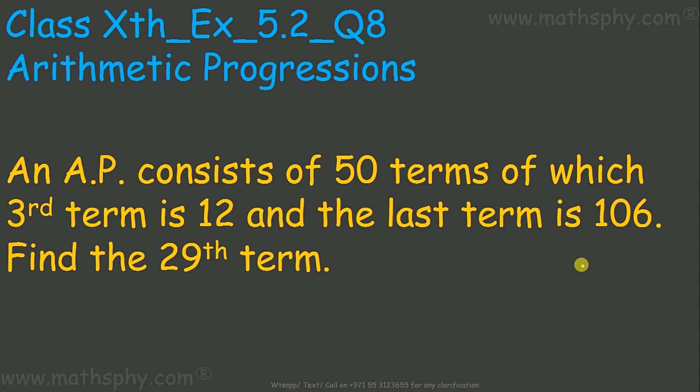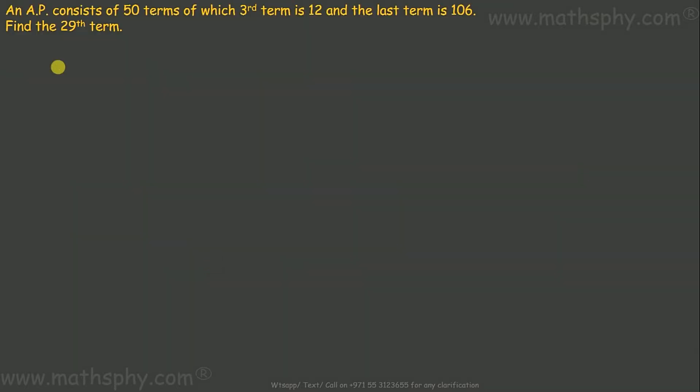This question says an arithmetic progression consists of 50 terms of which the third term is 12 and the last term, means 50th term, is 106. Find the 29th term. So third term means a plus 2d which is 12.